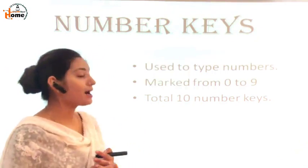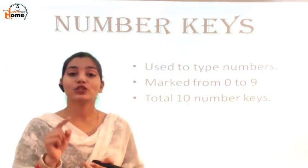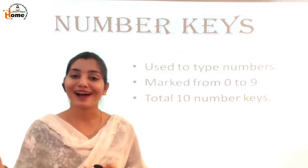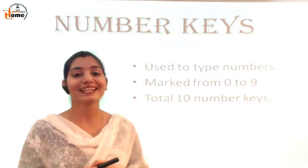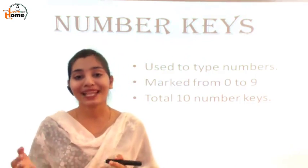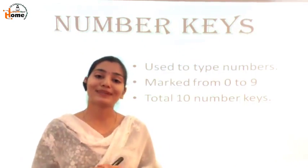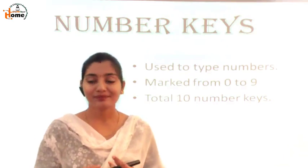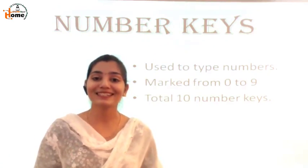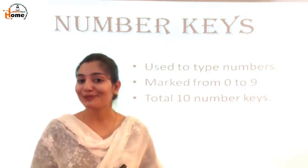Number keys are marked from 0 to 9 — that is 0, 1, 2, 3, 4, 5, 6, 7, 8, and 9. They are marked from 0 to 9. So in total there are 10 number keys. How many number keys are there on the keyboard? There are 10 number keys.